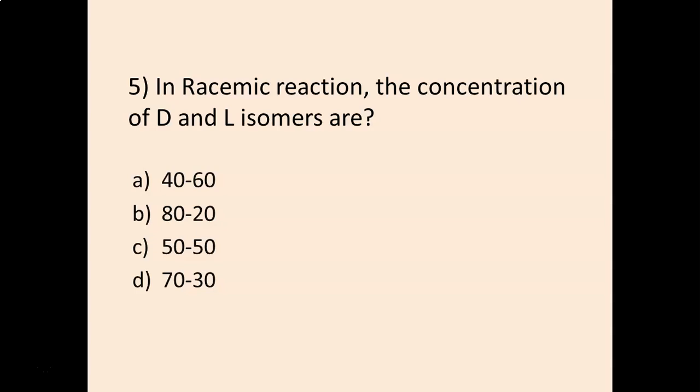Question number five: in a racemic mixture, the concentration of D and L isomers are — options are 40:60, 80:20, 50:50, or 70:30. The answer is 50:50, that is a 1:1 ratio.